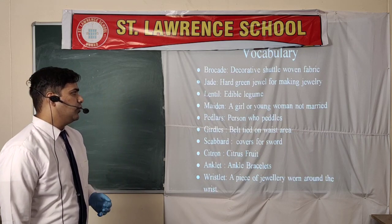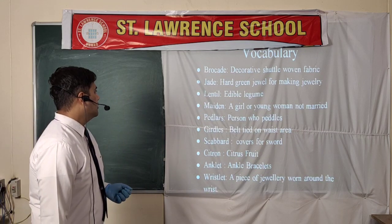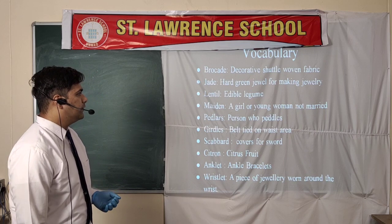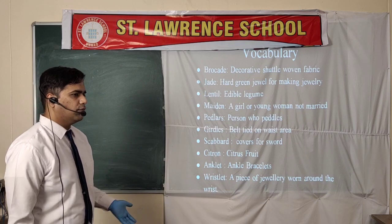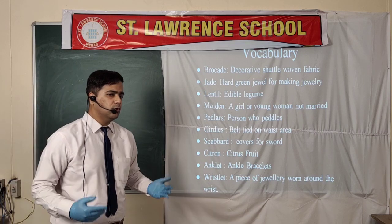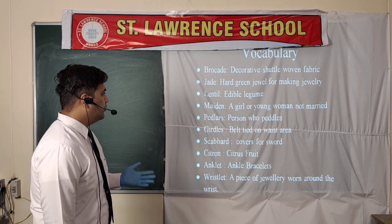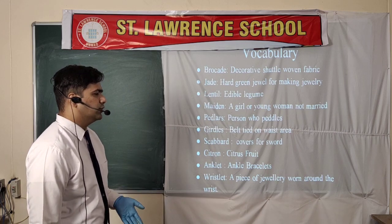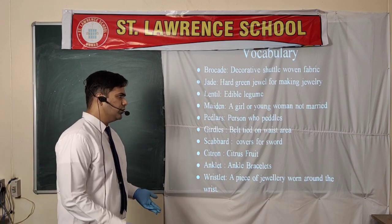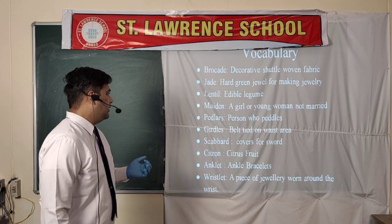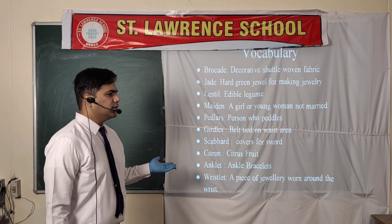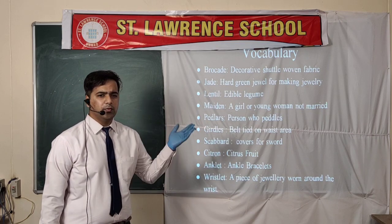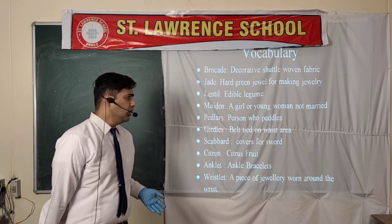Let us see some of the vocabulary which will be used in the poem. Brocade is a decorative shuttle-woven fabric, a kind of fabric which is to be worn. Jade is a hard green jewel used for making jewelry, basically a green stone. Lentil is an edible legume belonging to the lentil and pulses family.